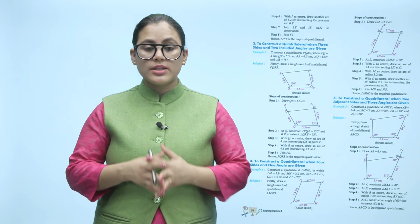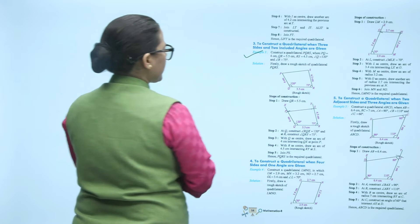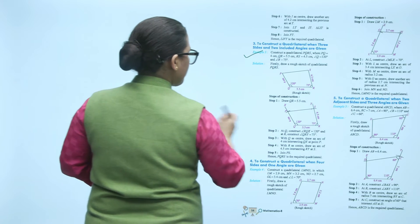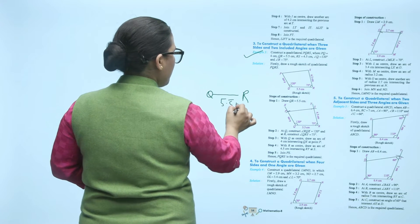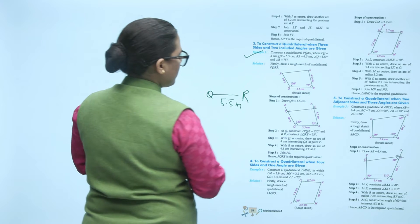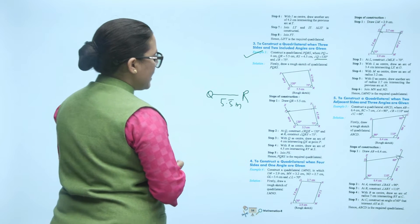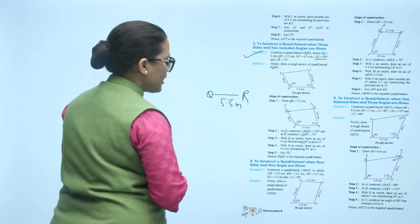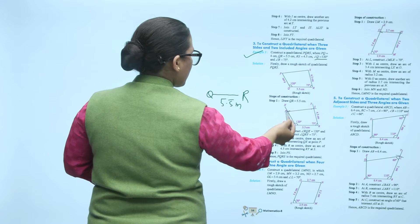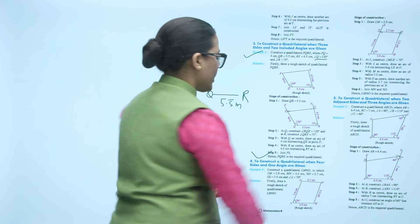Next, construct a quadrilateral when three sides and two angles are given. You have quadrilateral PQRS. First draw QR as a line segment of 5.5 cm. Then make angle Q of 120 degrees and put an arc for a 75 degree angle. After this, put an arc from center of 4.5 cm, then put arcs accordingly and join the points to get quadrilateral PQRS.